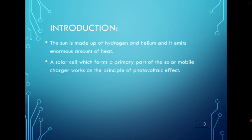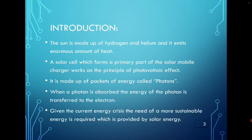First, introduction. The sun is made up of hydrogen and helium and it emits enormous amount of heat. A solar cell which forms a primary part of the solar mobile charger works on the principle of photovoltaic effect. The photovoltaic effect is the generation of voltage and electric current in a material upon exposure of light. It is a physical phenomena.